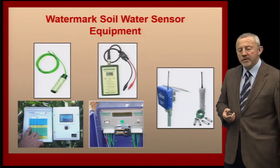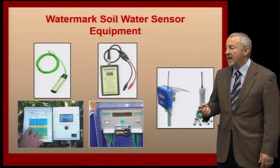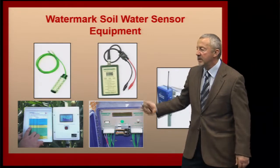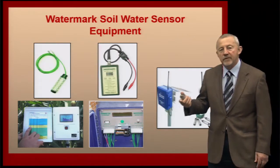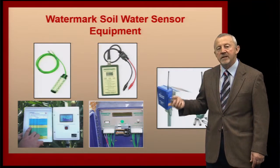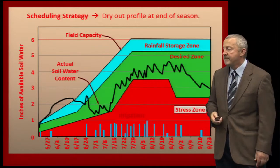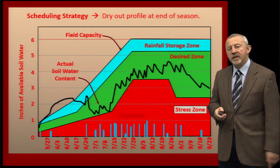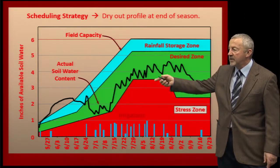We're also going to share information about soil water monitoring equipment available on the market — specifically, how you might use watermark soil water sensors to estimate how much water is in the soil profile for the crop to use, and then determine whether an irrigation event is needed to supplement that water as the growing season goes on. We'll talk about management strategies for how we're going to manage the water available to the crop through the growing season.